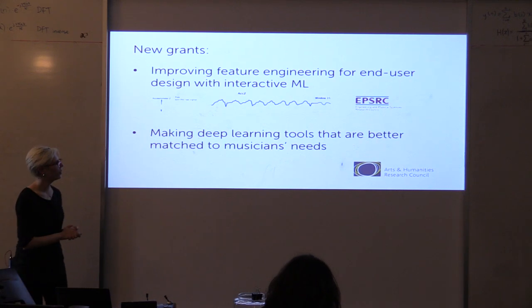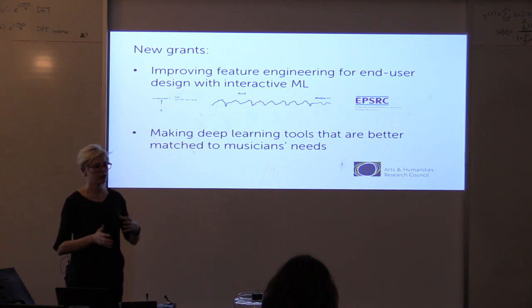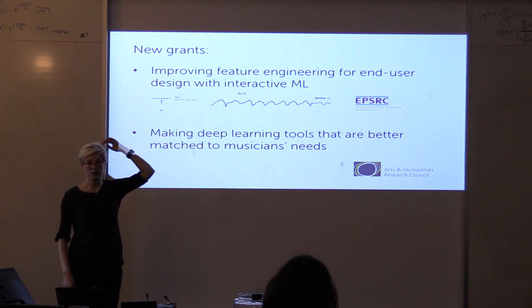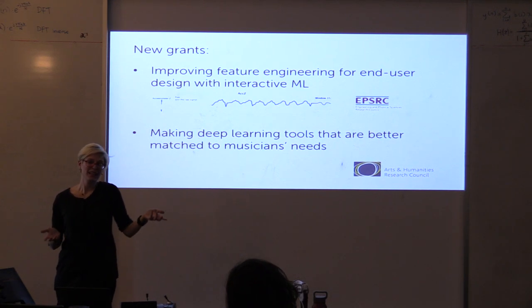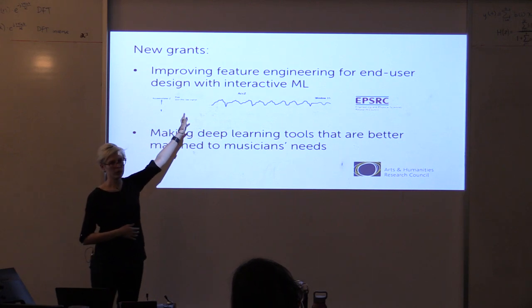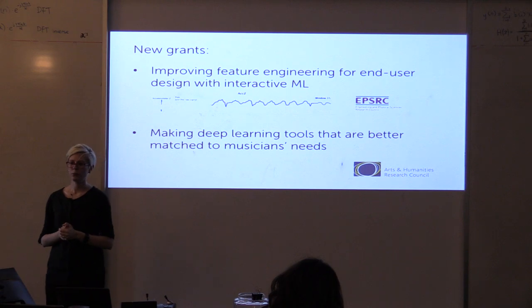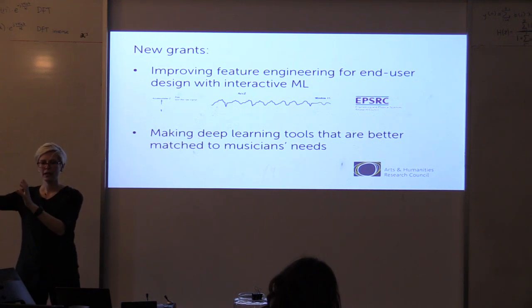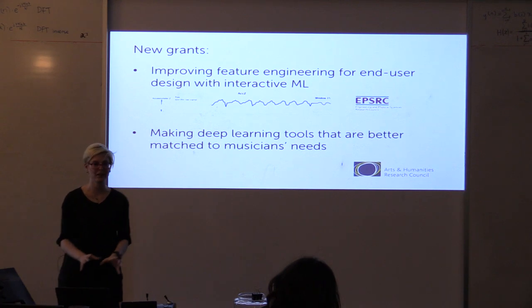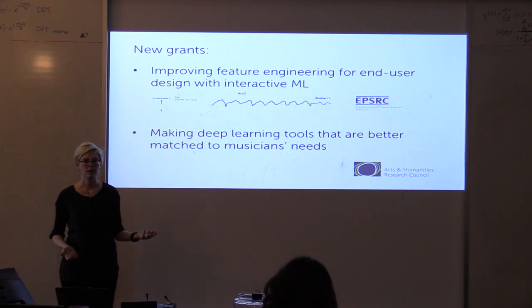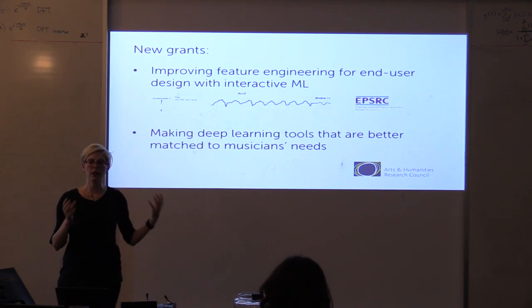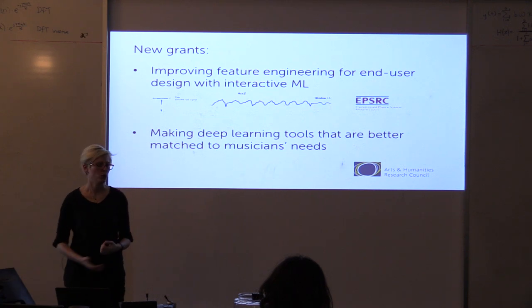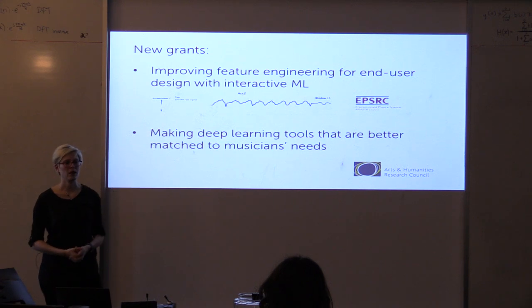I've got a couple of new grants at the moment. One is focusing on the problem of feature engineering — which if you've done any machine learning you know is key, since having the right representation of your data is essential to being able to learn something. A lot of people in computer science at the moment are pretending feature engineering is solved because we've got deep learning and can just learn good representations. Sometimes that's the case, and sometimes representations learned from ImageNet or other deep learning systems are really fun to stick into creative tools like Wekinator. But sometimes you can't do that — a lot of what I'm interested in is enabling people to build things from small data sets or totally weird data sets that don't exist out there in the world, and then feature engineering becomes important again.